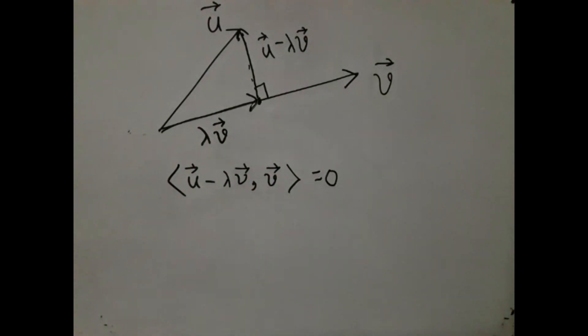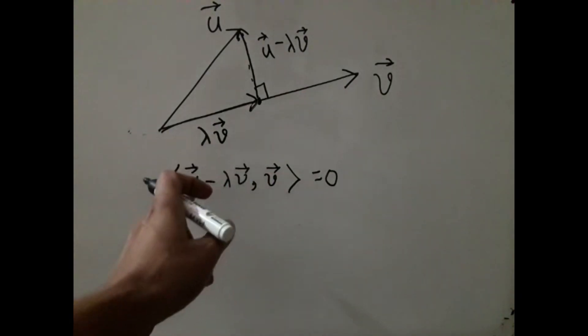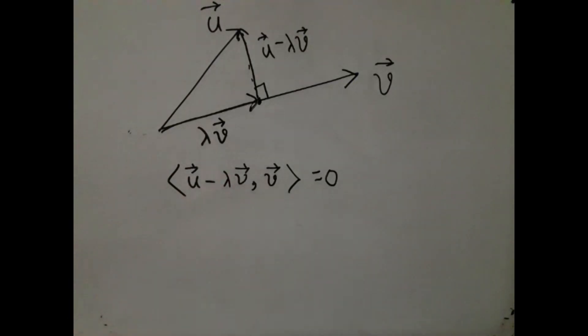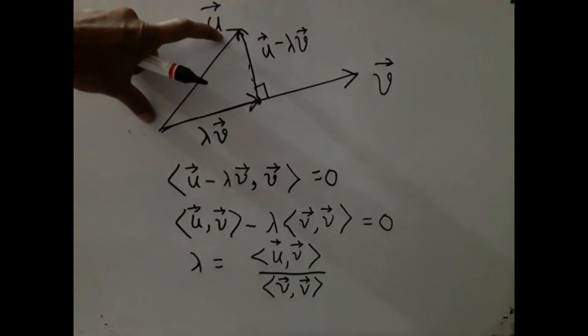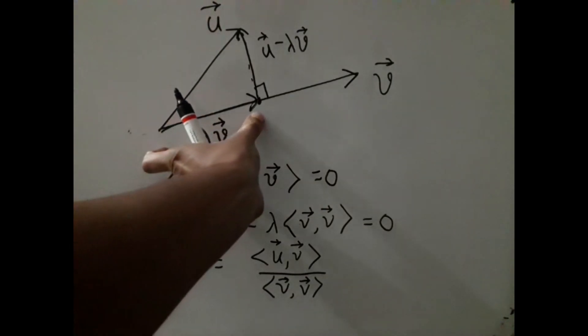Now since we already have distributivity property in the first argument, we can immediately rewrite this. If we express λ in terms of u and v, we get λ = (u·v) / ||v||^2.